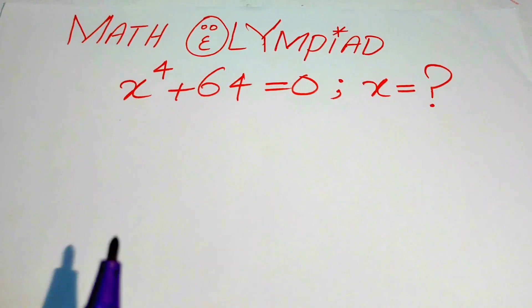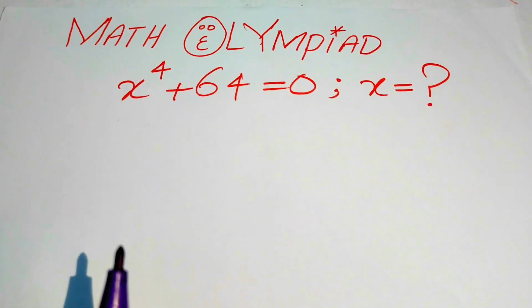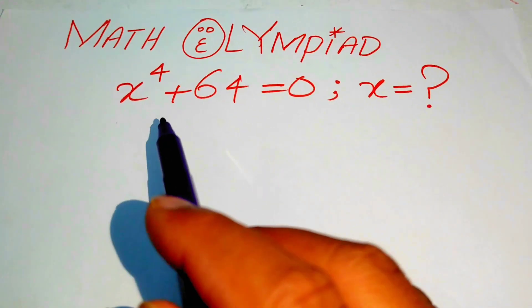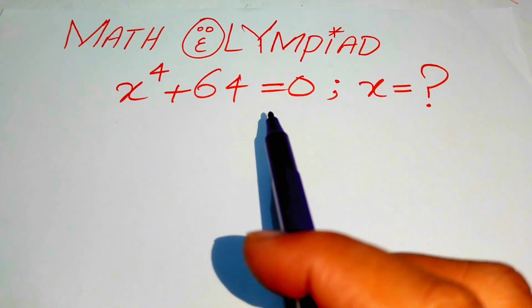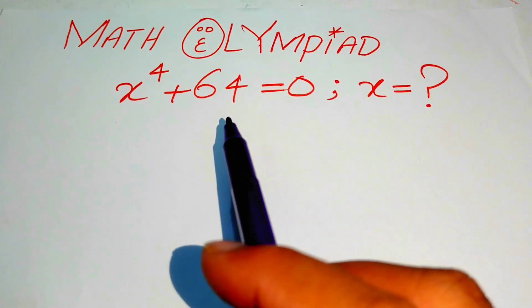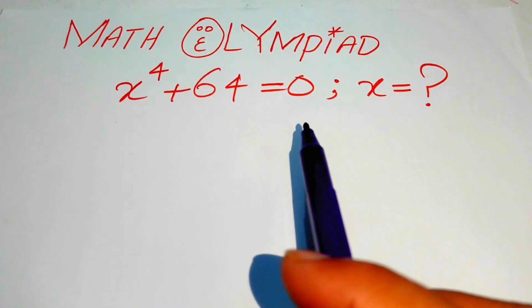Hello everyone, welcome. We solve this algebraic problem: x to the power of 4 plus 64 equals 0, and we solve this problem for the values of x.